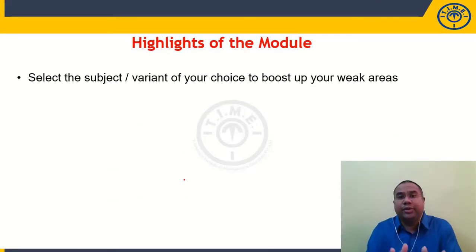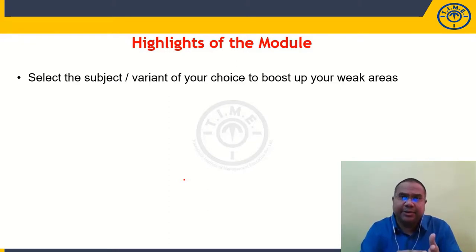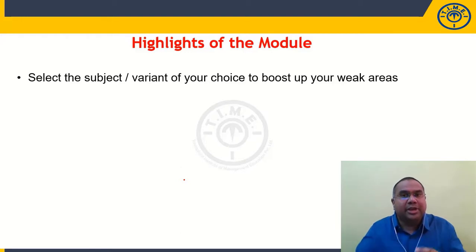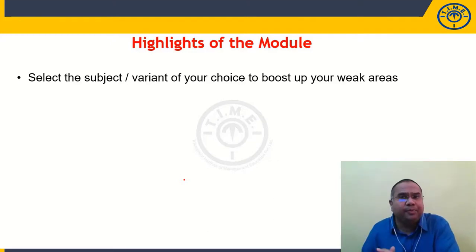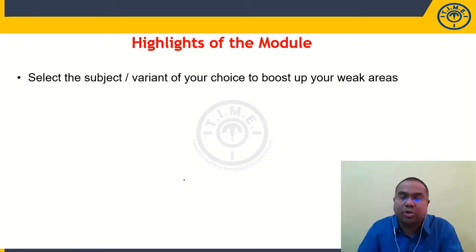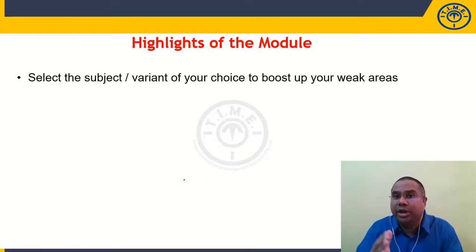You can select the subject of your choice to boost up your weak areas. Let's say you are good at reasoning and English but not comfortable with quant. If you want to be in the final merit list, you have to maximize your score by improving your weak areas. You can select only the quant subject-wise module, where you will get quant and DI related videos, work out questions, and improve your subject knowledge as well as your score in your examination.